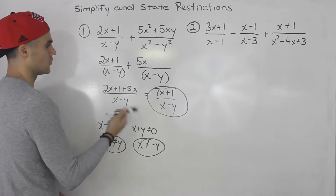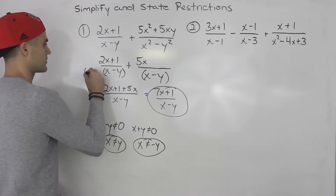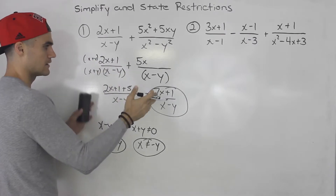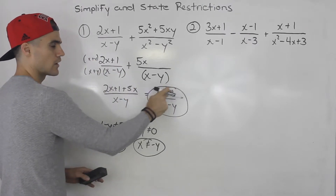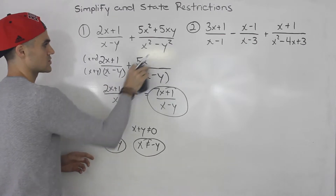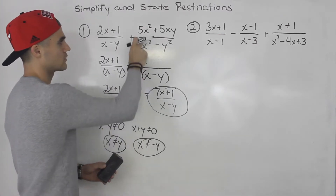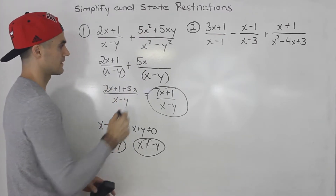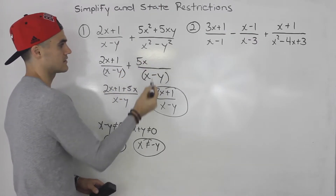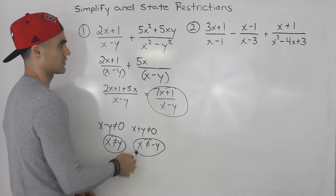It's a lot easier this way. If you hadn't canceled the x plus y's and instead gotten the common denominator first, you'd have to expand everything, and then the numerator would factor and the x plus y's would cancel anyway — giving you the same result but with a lot more work. So after factoring in the first step, always check if anything can cancel within one of the rational expressions. If it can, cancel it and everything becomes much easier. That's your final answer and those are your restrictions.